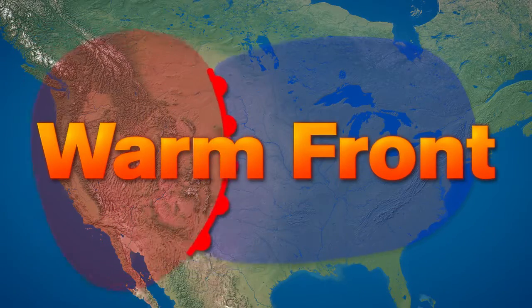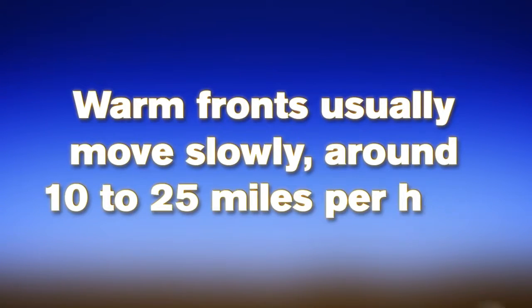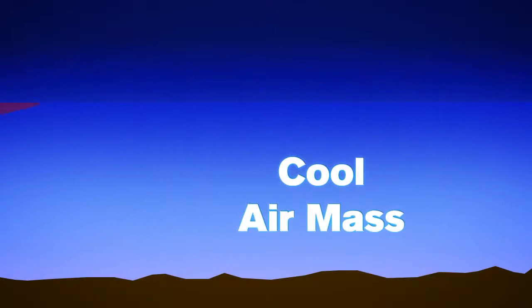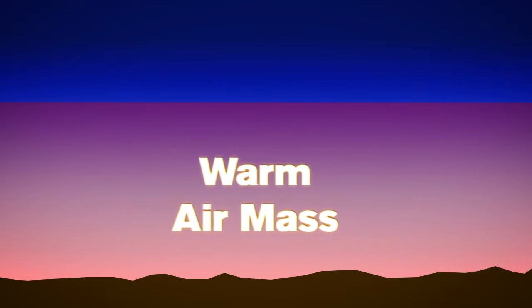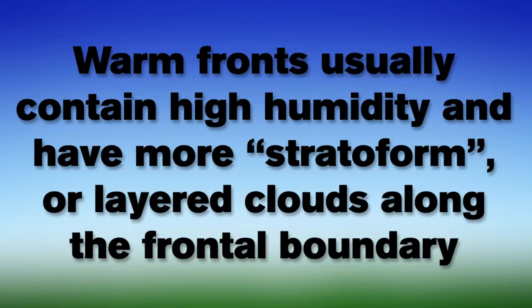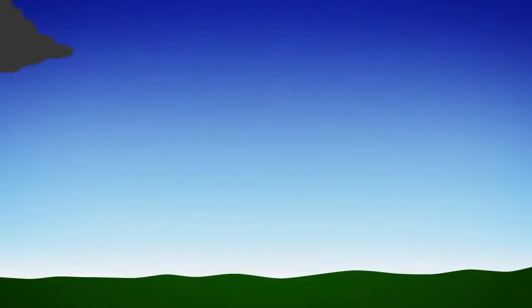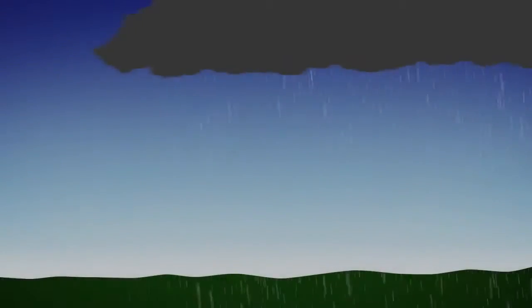A warm front occurs when a warm air mass overtakes an air mass of a colder temperature. Warm fronts usually move slowly, around 10 to 25 miles per hour, and have a gradual slope that will slide over the top of a cooler air mass and move it out of the area. Warm fronts usually contain high humidity and have more stratiform or layered clouds along the frontal boundary. Drizzle and decreasing visibility will be present as temperatures rise. Once the front passes, rain showers are possible, followed by a gradual clearing.